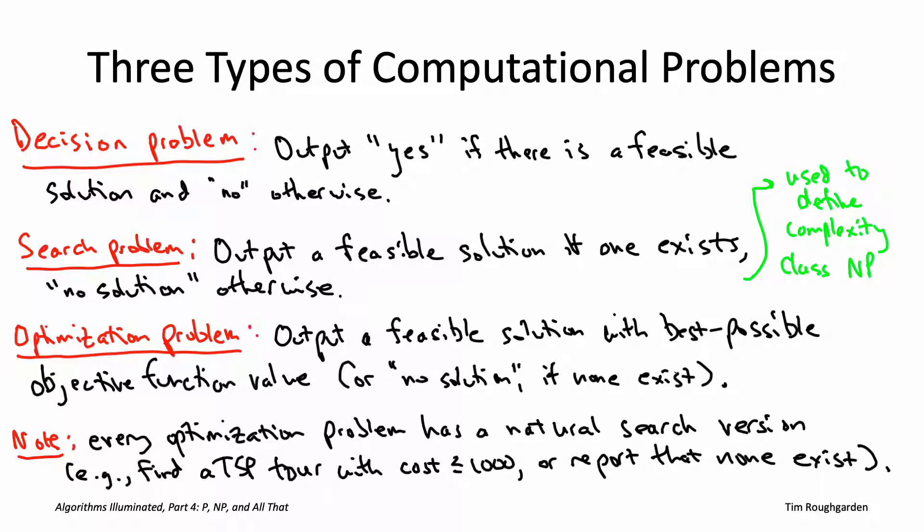In general, you can turn an optimization problem into a search problem by specifying an objective function target capital T and asking whether there's a feasible solution with objective function value at least as good as T.